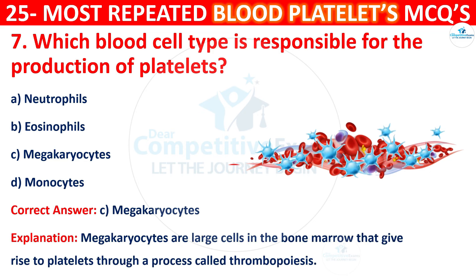The correct answer is C, that is megakaryocytes. Megakaryocytes are large cells in the bone marrow that give rise to platelets through a process called thrombopoiesis.